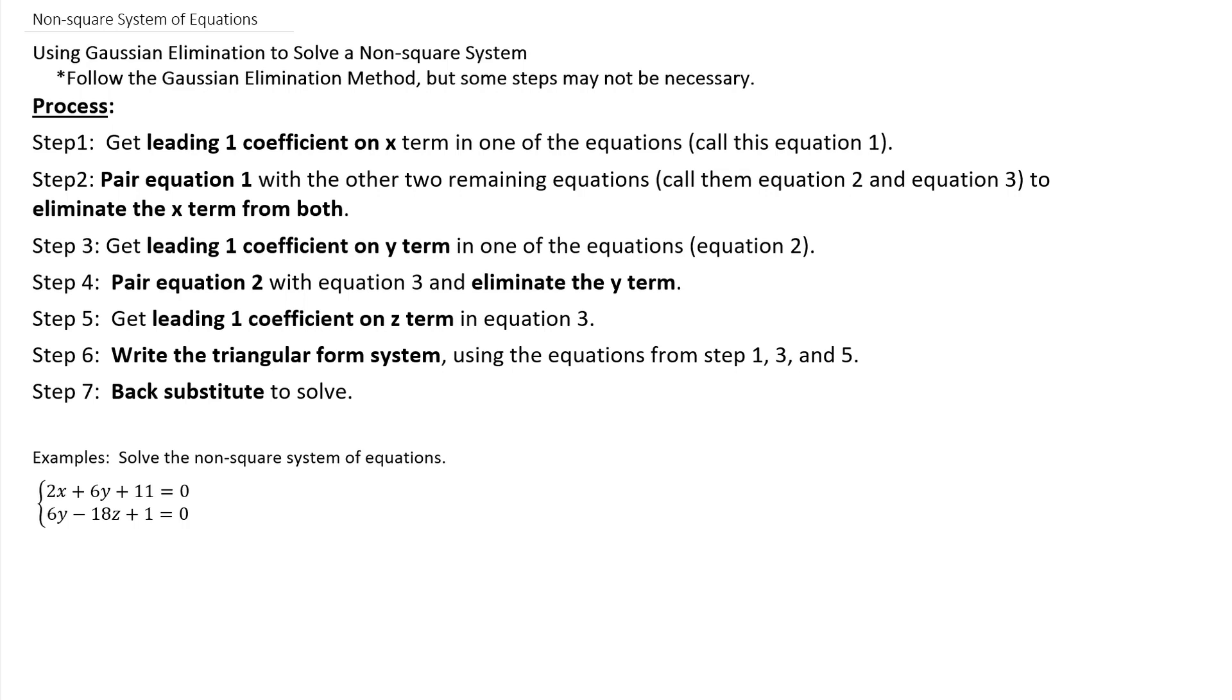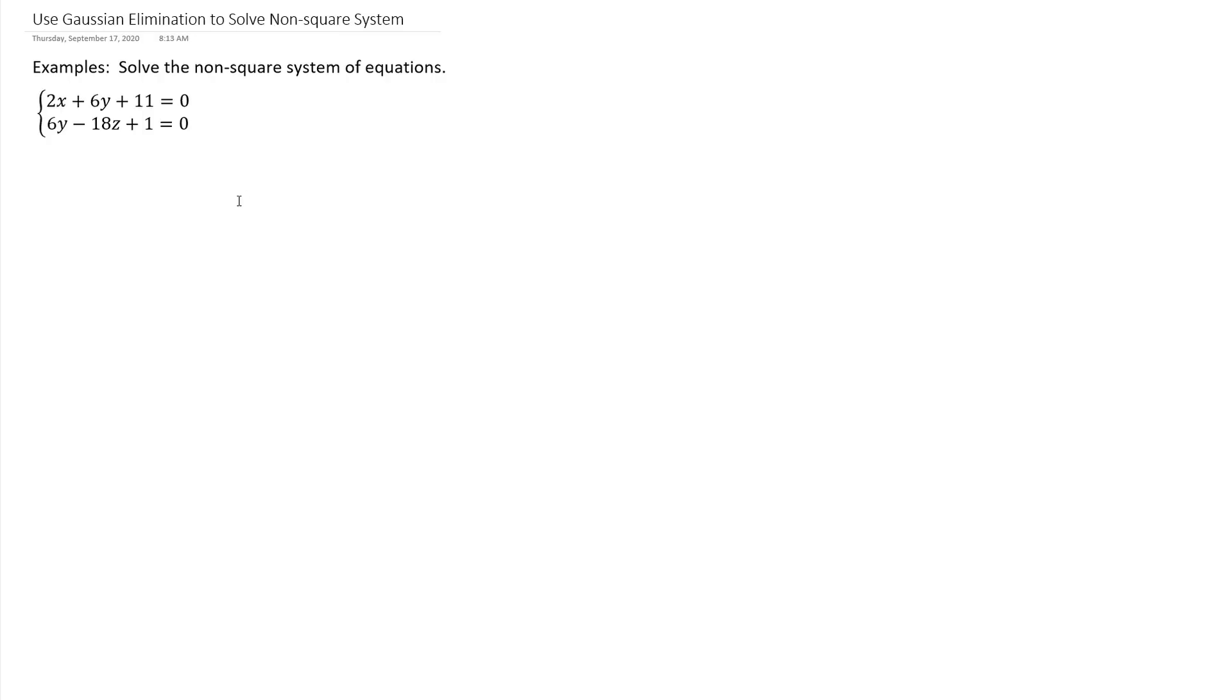So in that case, when you have that kind of scenario, then you're going to want to use Gaussian elimination like we did when we had three equations with three variables. The only difference is there's the possibility that you skip some of the steps in the process, but generally you're going to follow that process, and it'll be obvious when you need to skip a step.